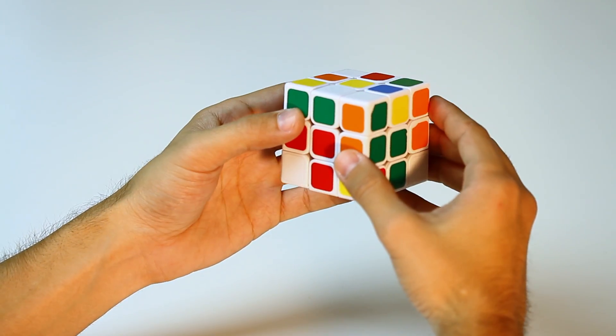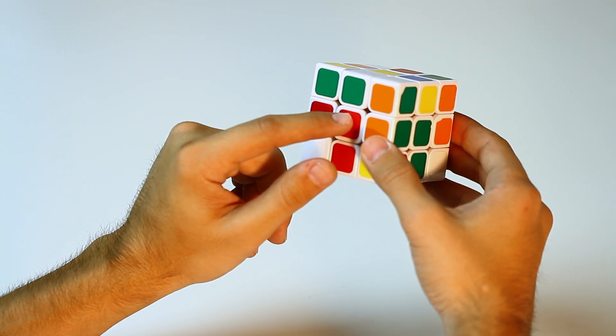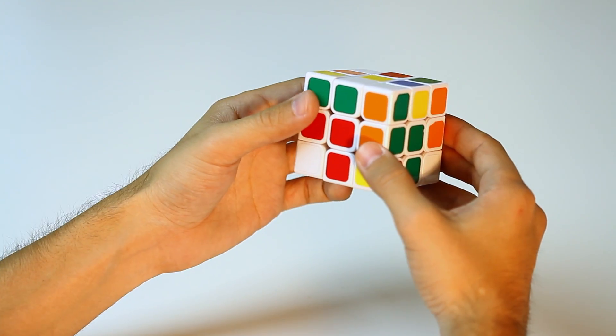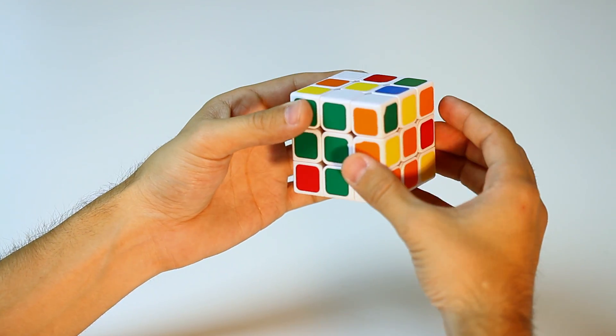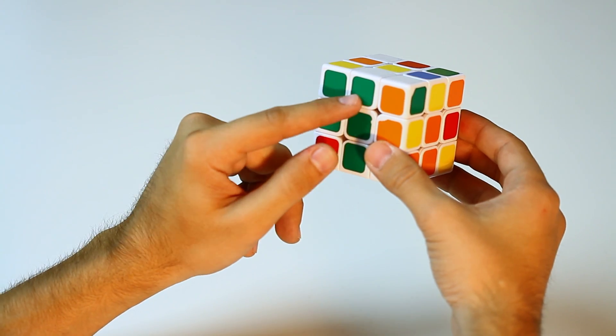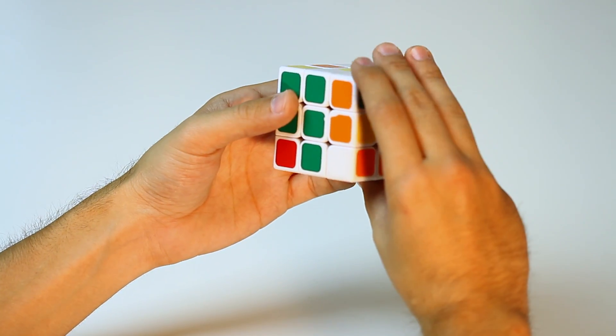And then the last side we have white, green, red. So we need to rotate these bottom two layers to the green side. So now we have white, green, green. Go ahead and rotate 180 degrees.